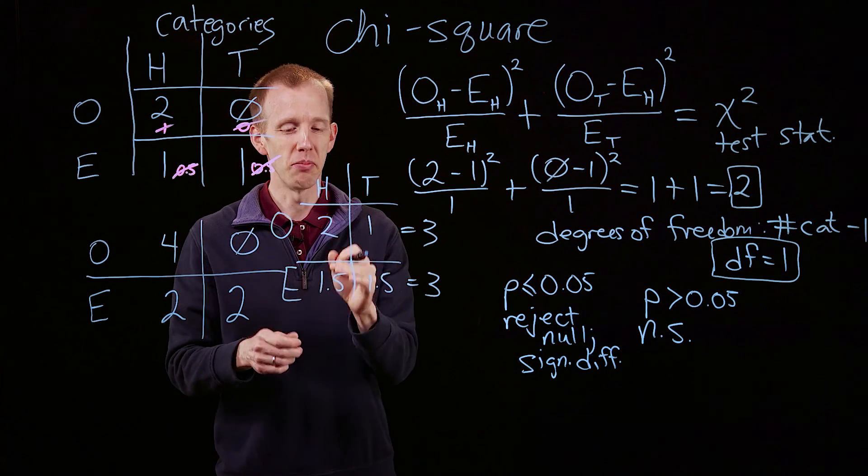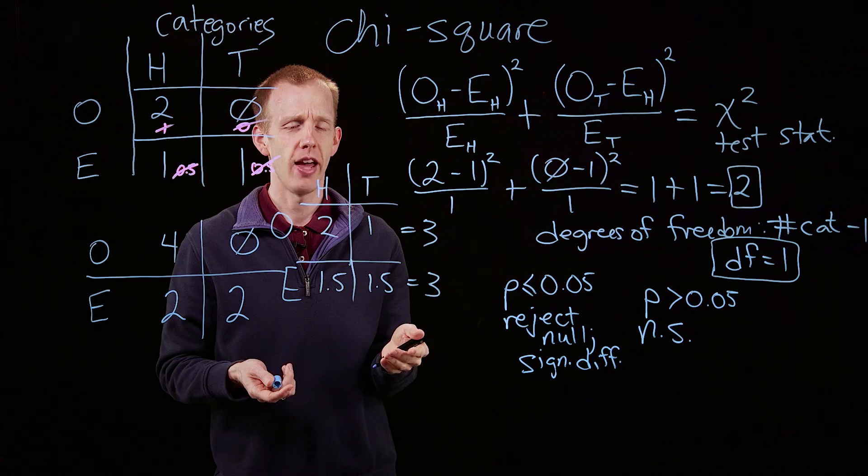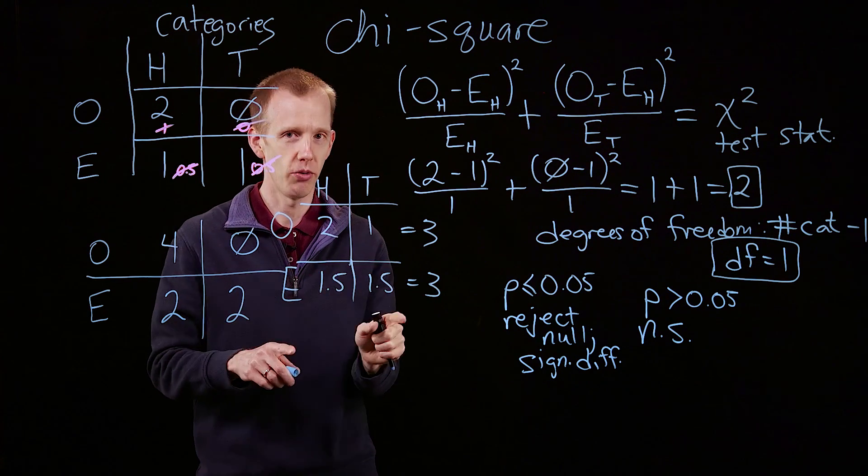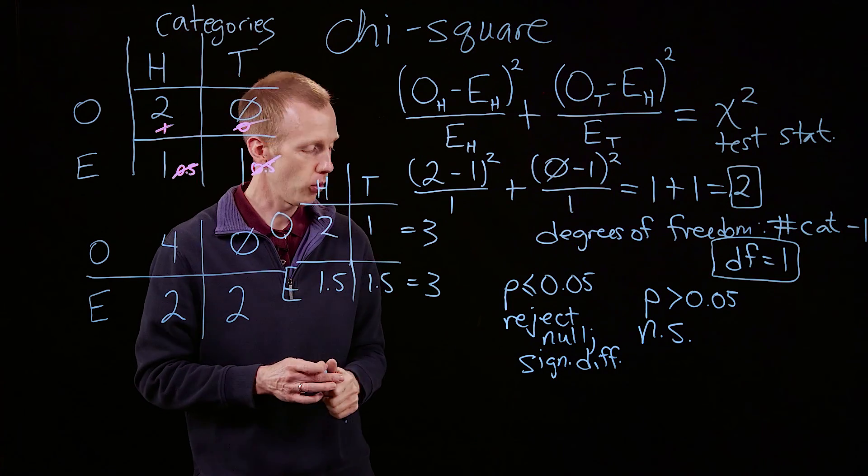Even though it's not actually meaningful to say that you get one and a half heads flips, you keep those fractions, those decimals, in the expected values. You never round. Always keep those decimal points there.